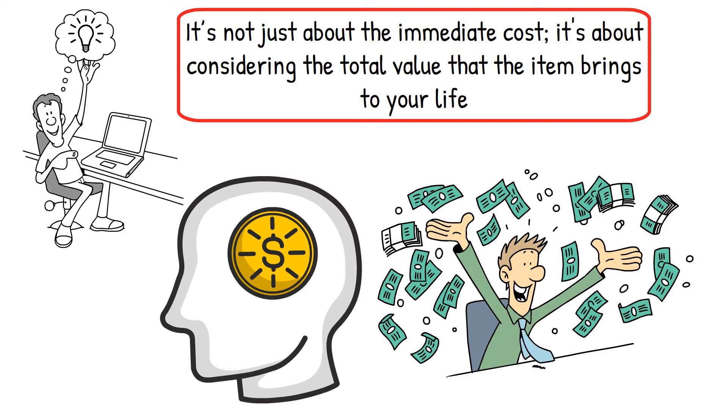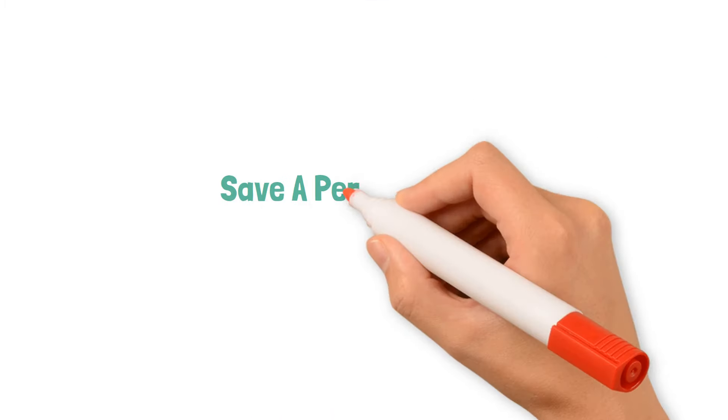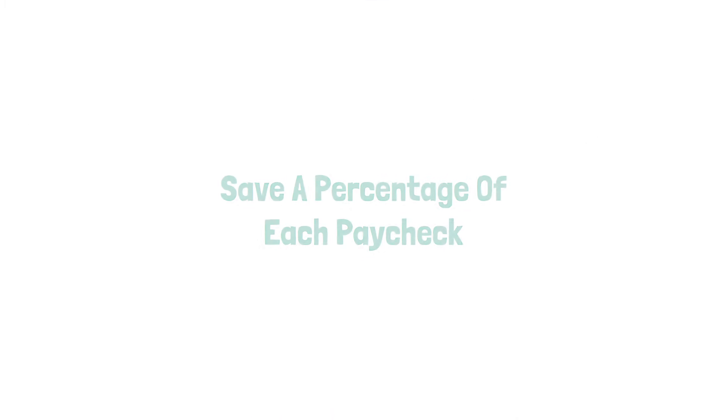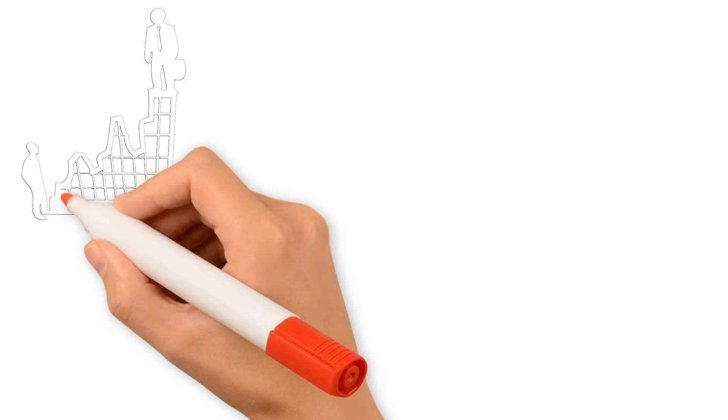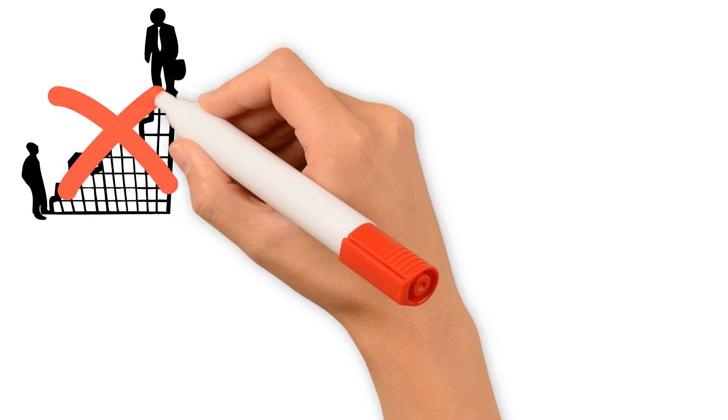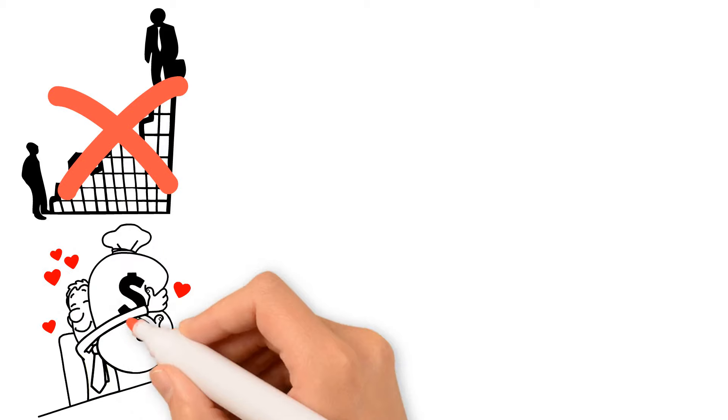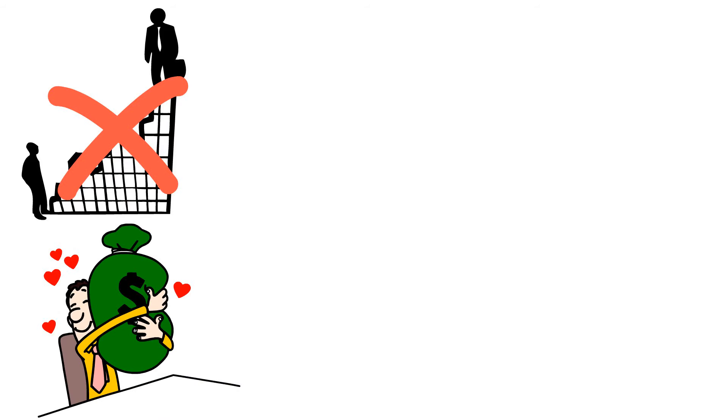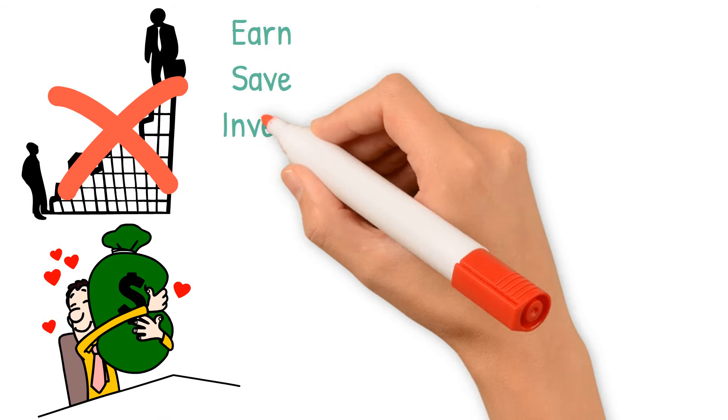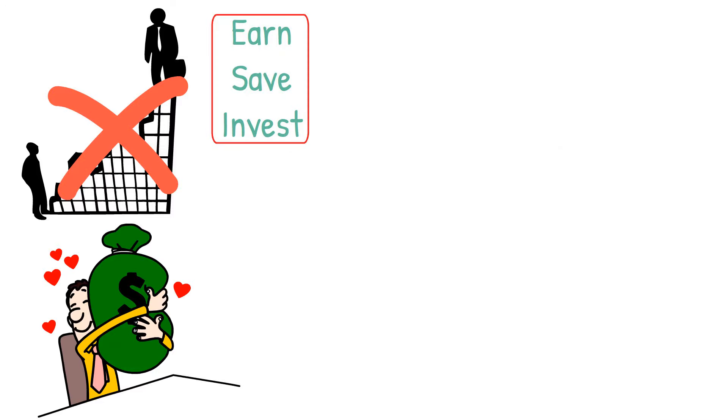Another essential tip for saving more and living frugally is to save a percentage of each paycheck. Buffett's approach to wealth building isn't just about being frugal, it's also about what you do with the money you save. It's a three-step process: earn, save, then invest.